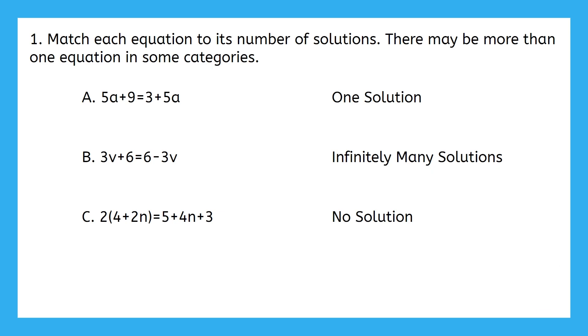I'll go through these one equation at a time, starting with A. This equation is nice because it's already fully simplified. I can see here that I have the same amount of variables on both sides, 5a. But, the constants do not match. One side has 9, and one has 3. I think that means this will have no solution, but let's try canceling the variables to double check. If I subtract 5a from both sides, I'm left with 9 equals 3. That is not true, and ending up with an untrue statement means this equation has no solution.